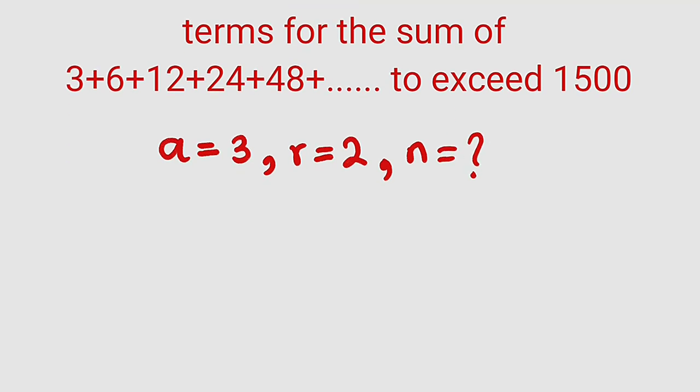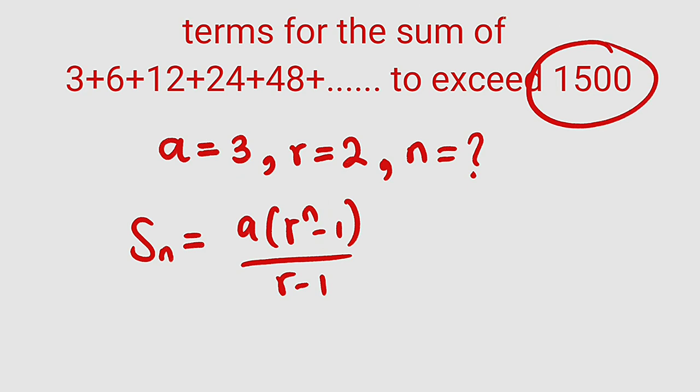So what is the formula for calculating the sum of geometric series? Sn is equal to a multiplied by (r to the power of n minus 1) divided by (r minus 1). This is the formula. So now let us substitute the data here.